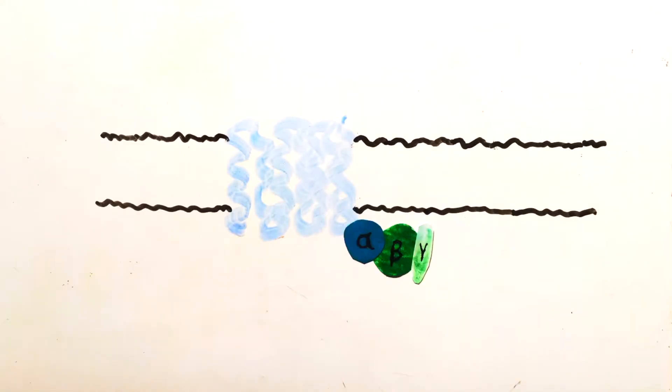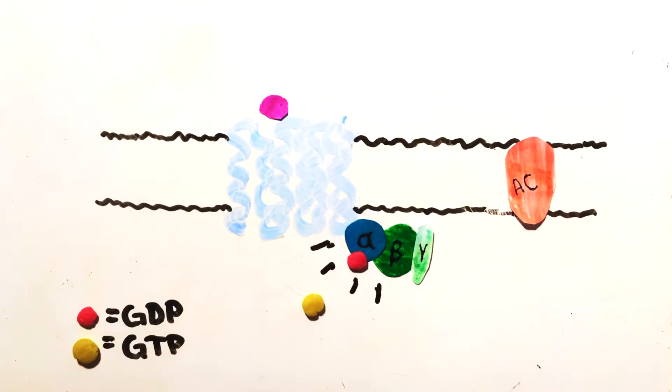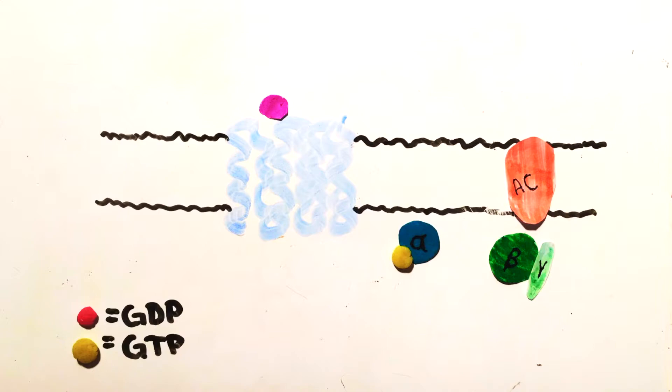When an agonist binds, the G protein activates. The GDP molecule bound to the alpha subunit is released and replaced with GTP. The protein dissociates into the alpha subunit and the beta gamma subunit, both of which can now interact with other protein pathways.